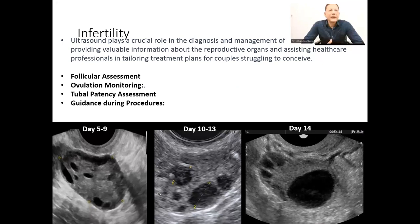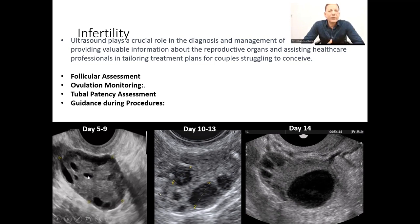Infertility. Ultrasound helps in cases of infertility in many ways, like in assessing the follicular growth. Normally, there are approximately 9 to 10 follicles. Follicles are these black structures that you can see within the periphery of this ovary. These follicles start at about 9 to 10 in number, and then they start growing. On the 10th or 13th day, one of them is selected — it becomes the largest in size. That is called the dominant follicle.